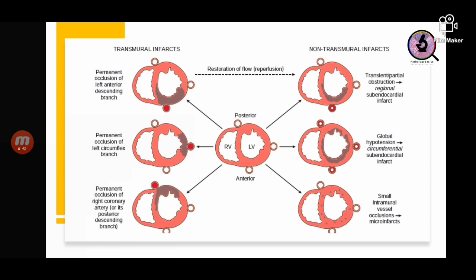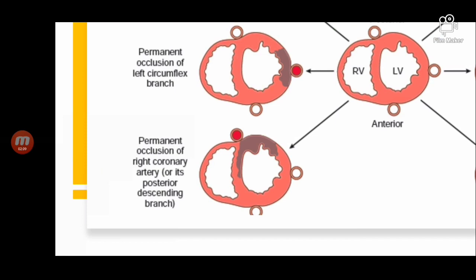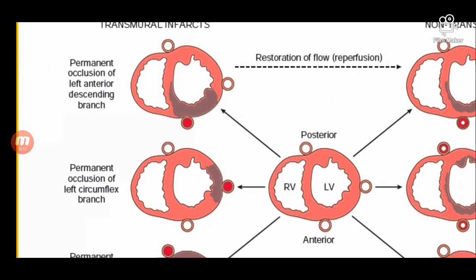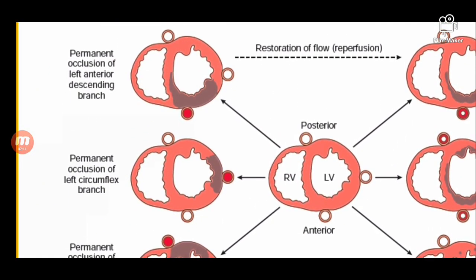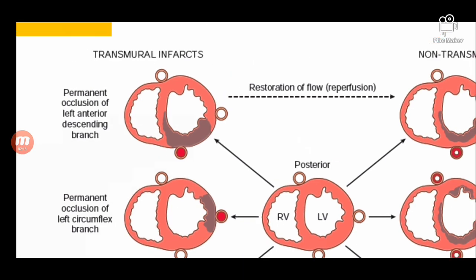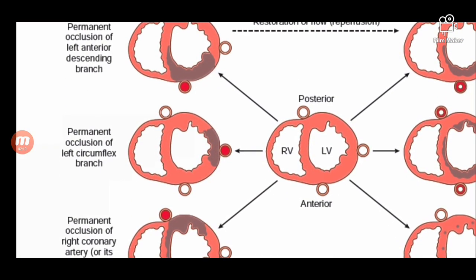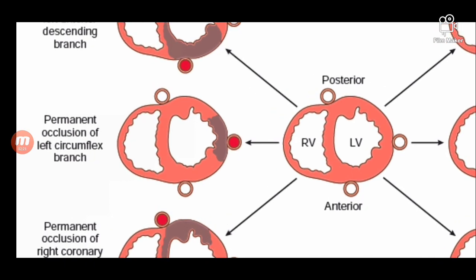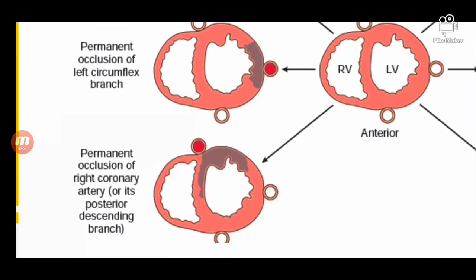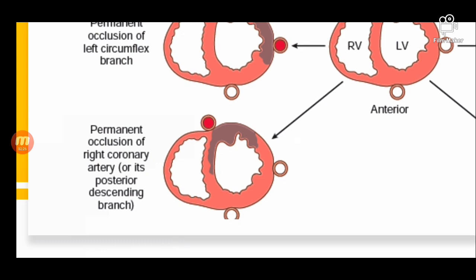This figure shows which area of the ventricles will be involved depending on which artery is affected and whether the infarcts are subendocardial or transmural. For transmural infarcts: the left ventricle and portion of the septum are affected if the LAD is involved; a different area is affected if the left circumflex is involved; and a corresponding area when the right coronary artery is involved.